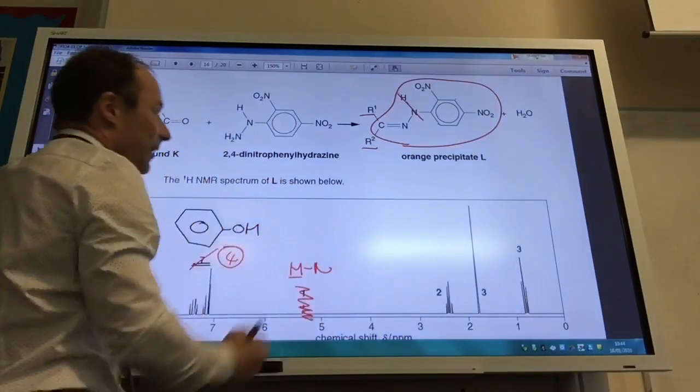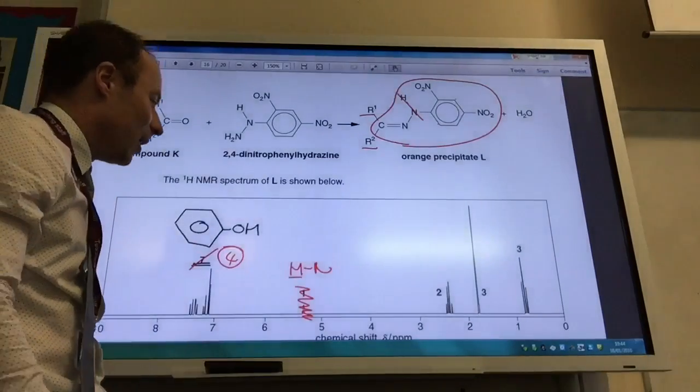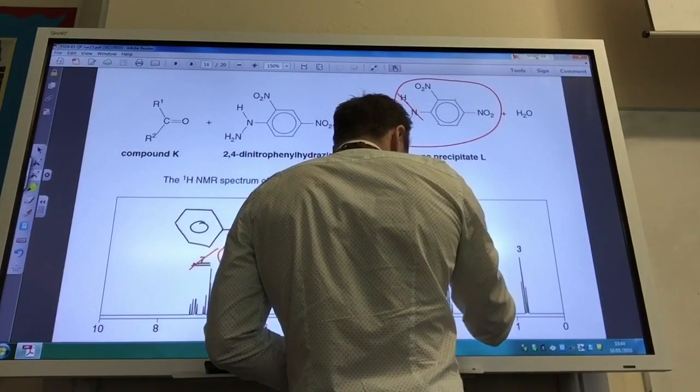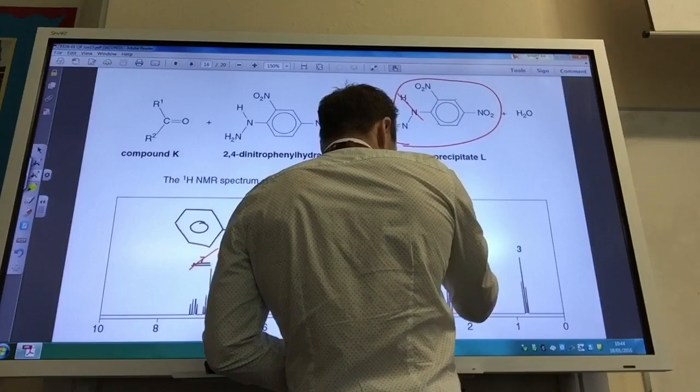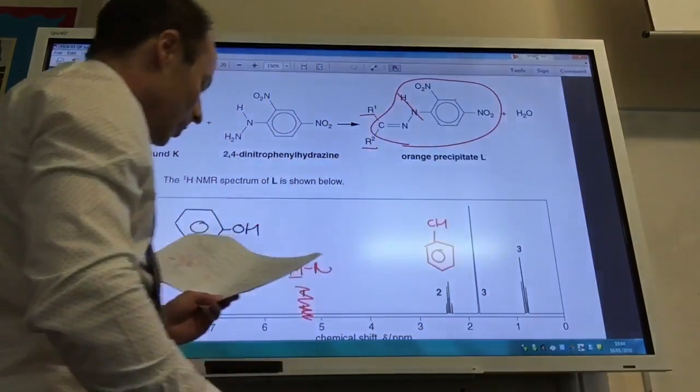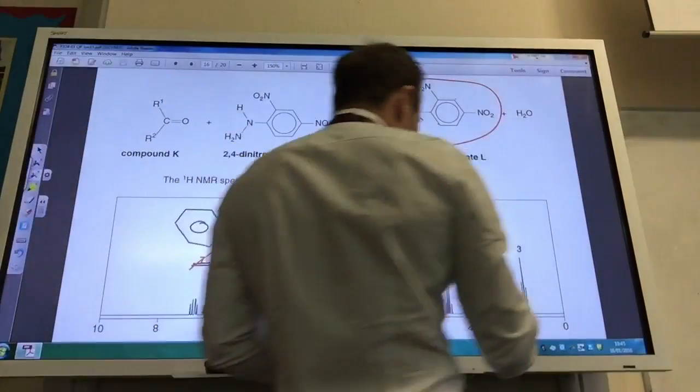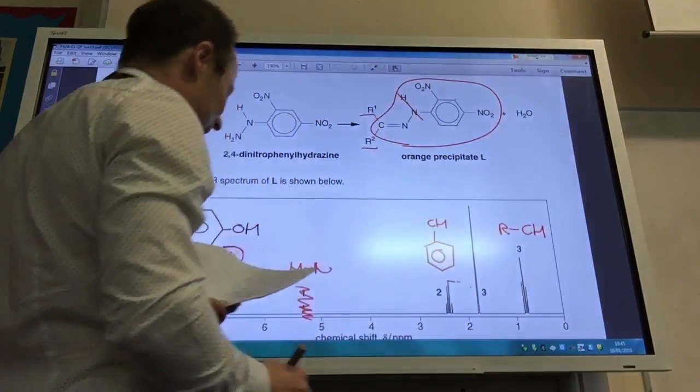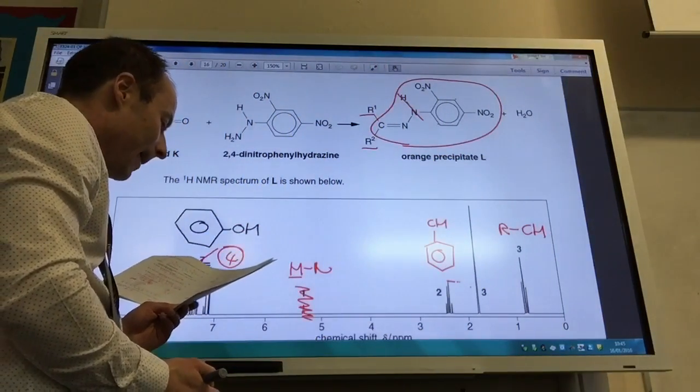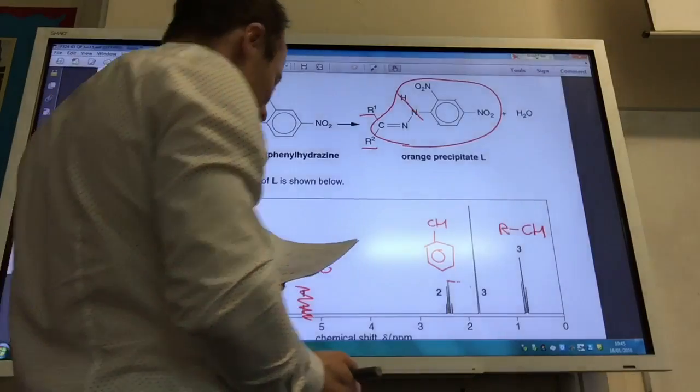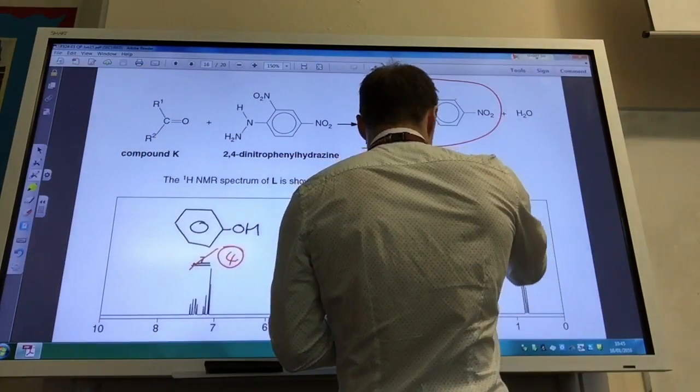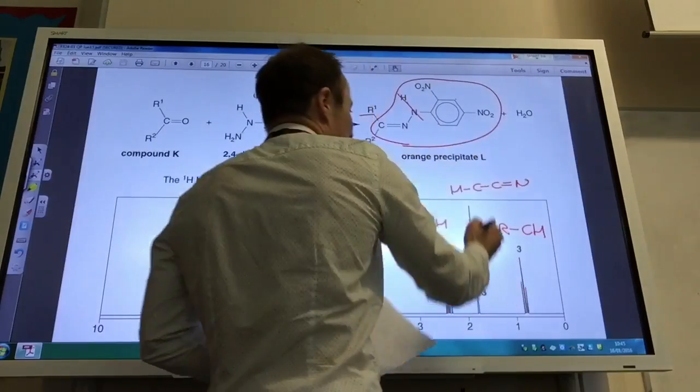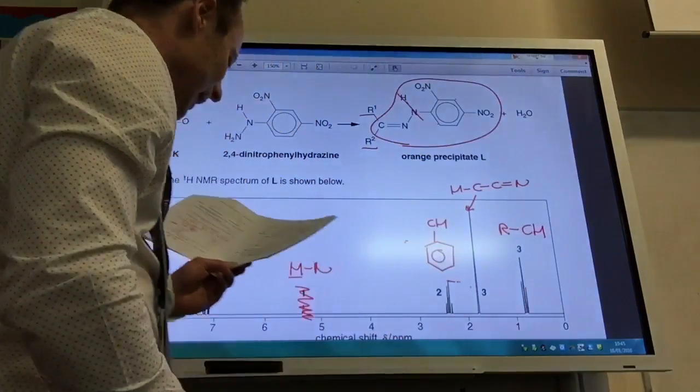This boy here is NH if you look at your data sheet which is going to be this guy there. So I don't need to worry about that in terms of identifying R1 and R2. For this one here, this is going to be hydrogens attached to a carbon which is attached to a benzene ring. These guys here are just going to be normal hydrogens attached to a bog standard carbon. And then for these guys here, that is going to be H which they told you is going to be those types of hydrogen there.